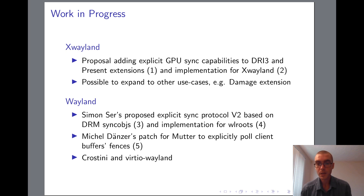Also, Michel Dänzer has shared a patch for GNOME's Mutter compositor to have it explicitly pull the implicit fence of client-provided buffers before compositing from them, which solves the issue I mentioned earlier where the server's frame rate can be limited by a slow-rendering client. So in that case, we can see that some of the benefits of explicit sync can be realized even with only part of the stack using that model. Finally, although perhaps a less general application, Crostini — which is used to run Linux applications in a virtual machine on Chrome OS — also uses explicit sync when interfacing with the Wayland compositor on the host system. It operates by piping Wayland protocol between the host and the guest over a VirtIO interface, and relies on the DMA fence-based version 1 Wayland explicit sync protocol, along with Jason's implicit fence import/export ioctls that I mentioned earlier.